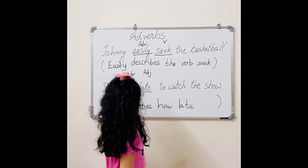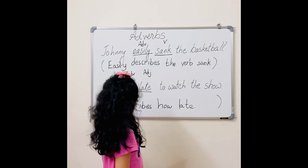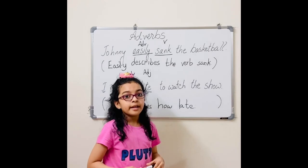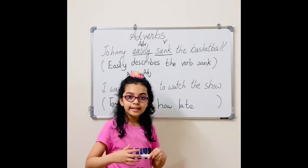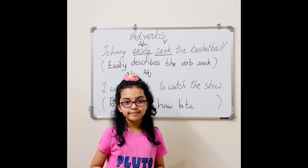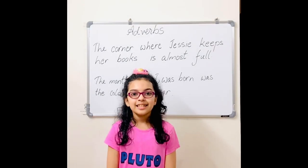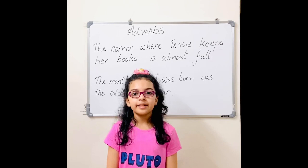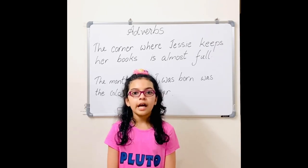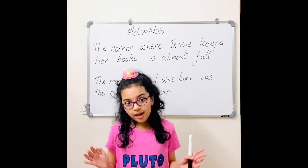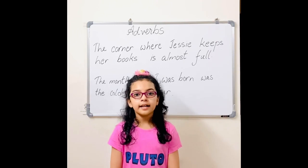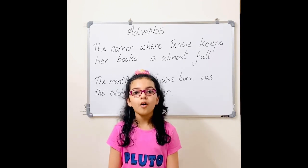Suppose the sentence was: I was late to watch the show. But you need to add an adverb. You ask yourself, how late? And the answer is: too late to watch the show. Now let me tell you about relative adverbs. There are three types of relative adverbs: where, when, and why. Relative adverbs connect two clauses or sentences.